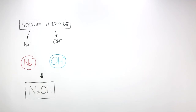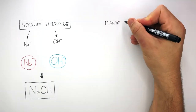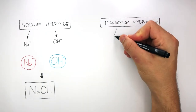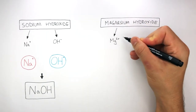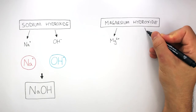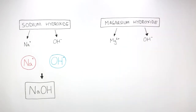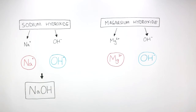In this next example, what is the chemical formula of magnesium hydroxide? Magnesium is in group 2, so it always forms Mg2+ ions. And a hydroxide ion is OH-. When we write out the ions, Mg2+ and OH-, we can see the magnesium ion has a charge of 2+ and the hydroxide ion has a charge of 1-.